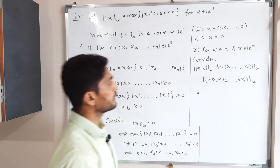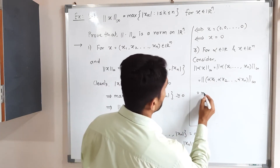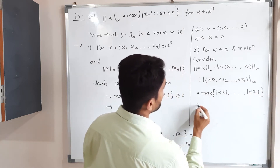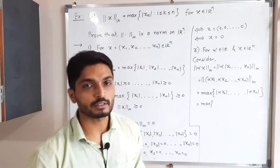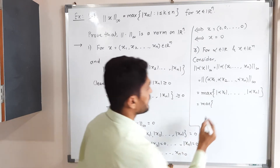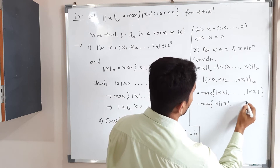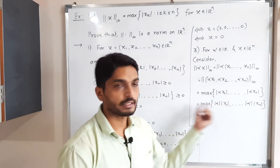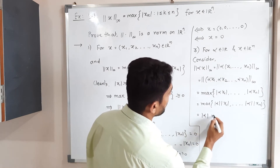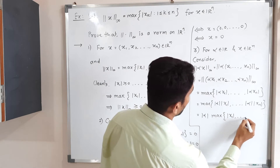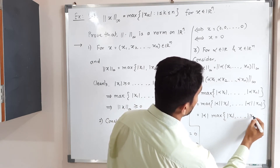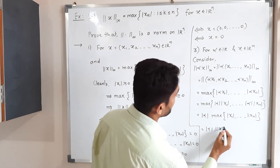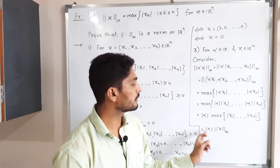Applying the definition: ‖αx‖∞ = max(|αx₁|, ..., |αxₙ|). Since there is a product inside, we can separate the modulus: max(|α||x₁|, ..., |α||xₙ|). Taking |α| as a common factor outside gives |α| · max(|x₁|, ..., |xₙ|) = |α| · ‖x‖∞. The third property is proved.